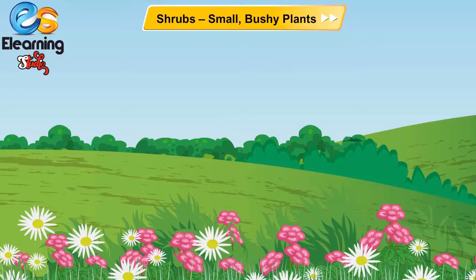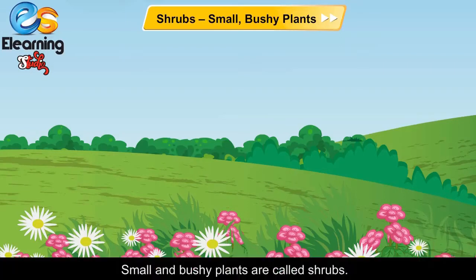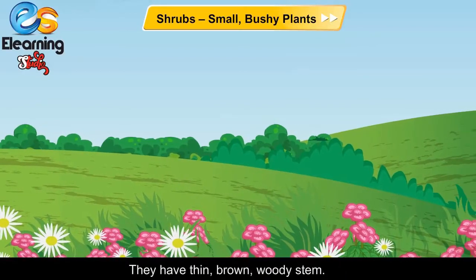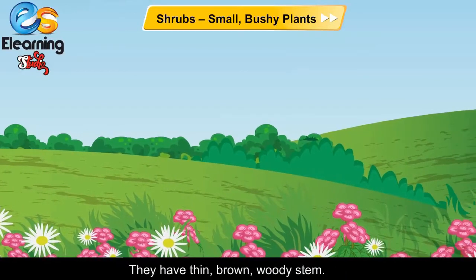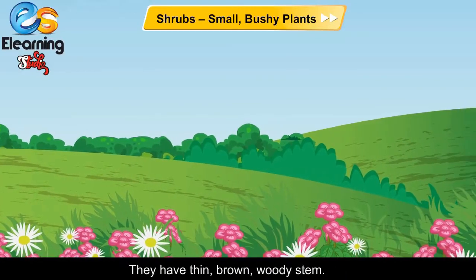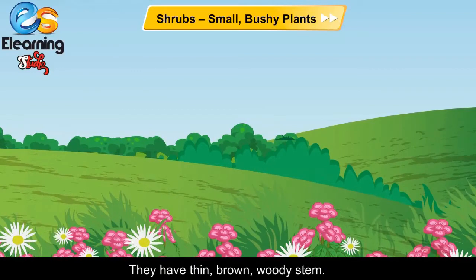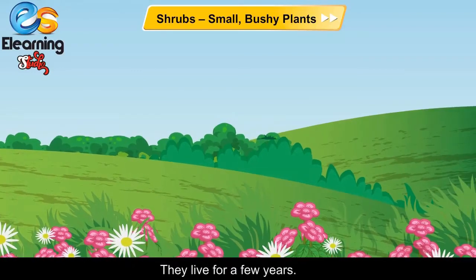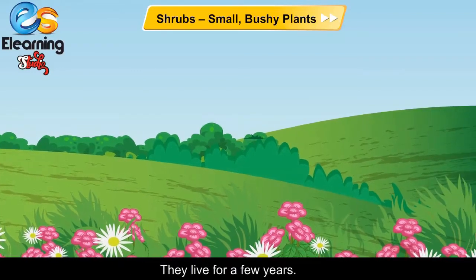Shrubs. Small and bushy plants are called shrubs. They have a thin, brown, woody stem. They live for a few years.